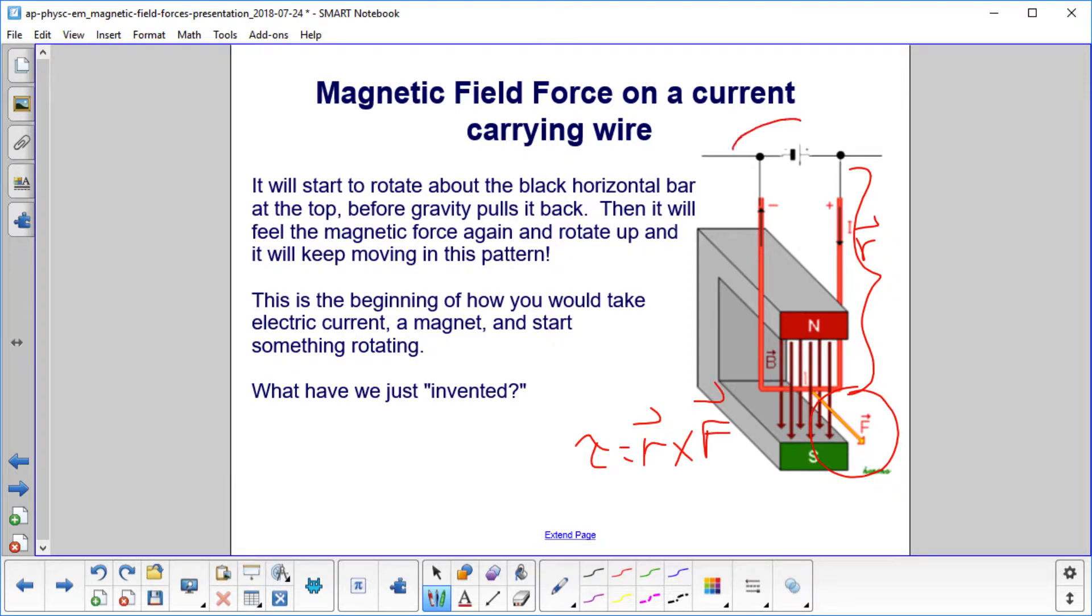So it will rotate about this axis and come out away from the magnet. Once it gets out of the magnetic field, it won't feel the force anymore. Gravity will pull it right back down, it'll probably overshoot and go inwards a little bit, then the force will pull it out again, and it'll kind of go back and forth.